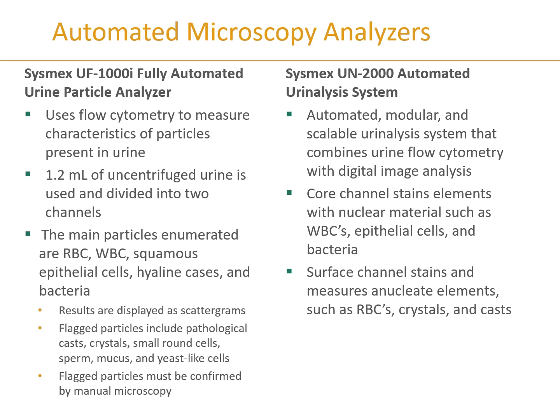Sysmex has a couple of analyzers that use flow cytometry paired with digital imaging to examine elements within the urine sample. Depending on the methodology, they categorize cells into red blood cells and white blood cells, examining nuclear material, cell contents, cell surface, and size — very similar to what automated CBC differential analyzers can do.